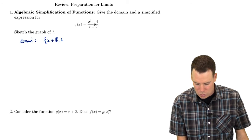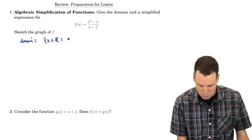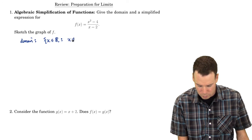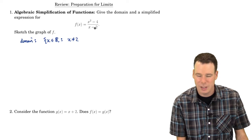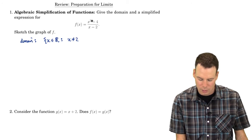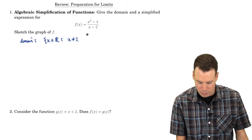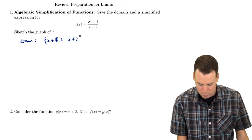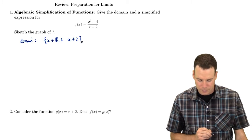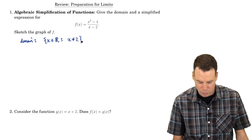The domain is going to be the set of all x values that makes sense to plug into the function. It doesn't make sense to plug 2 in because the denominator is going to vanish at 2. So we need to exclude 2 from our domain, but every other value of x makes sense — we plug it in, the bottom is non-zero, so we can always do that division. So there's our domain.